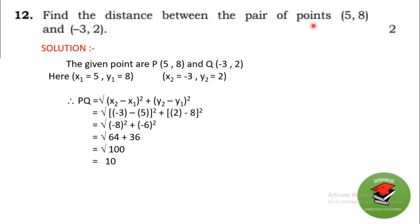Find the distance between the points P(5, 8) and Q(−3, 2). This is a very common question. Using the distance formula: √[(x2−x1)² + (y2−y1)²] = √[(−3−5)² + (2−8)²] = √[(−8)² + (−6)²] = √[64 + 36] = √100 = 10.